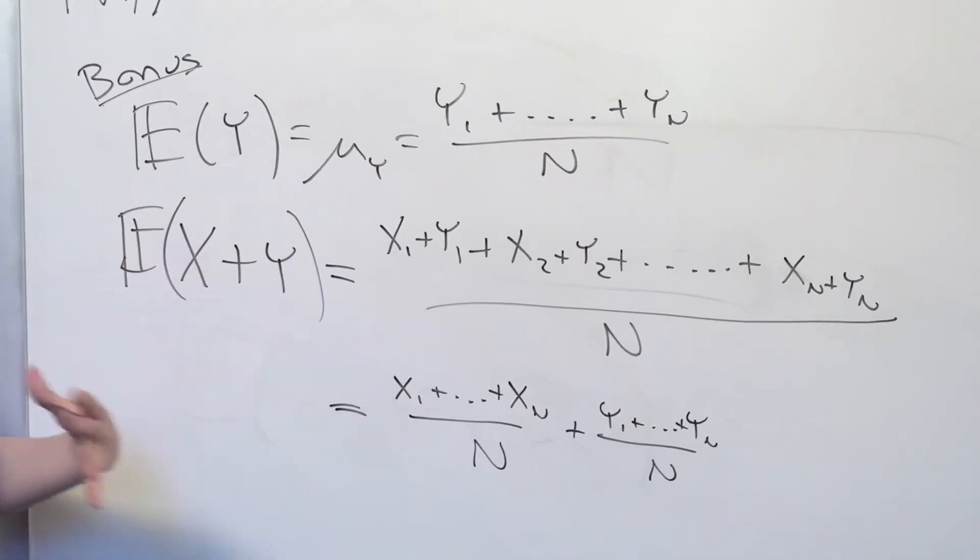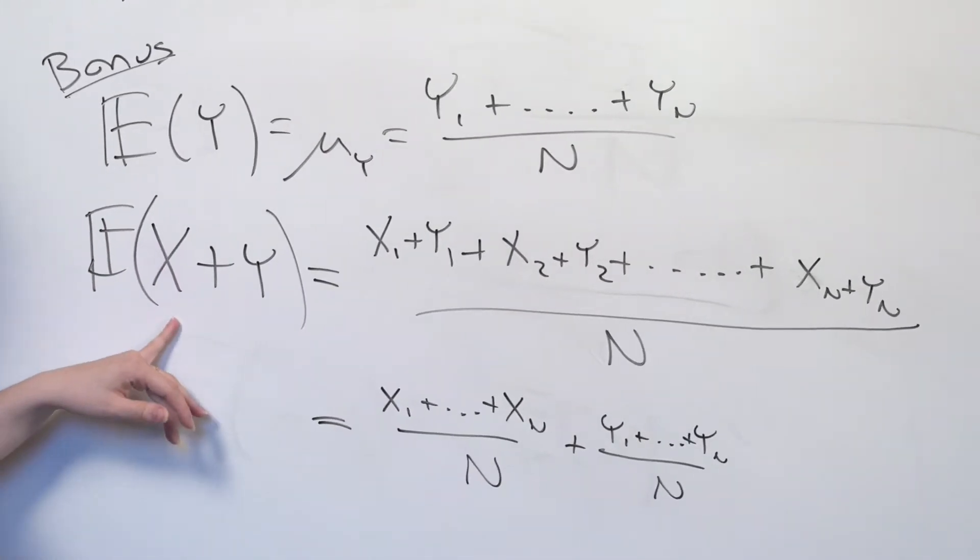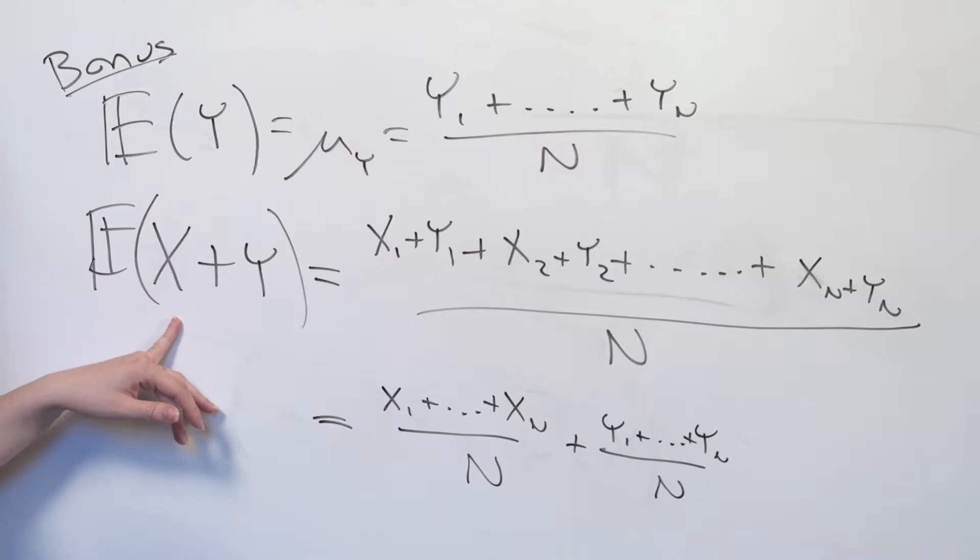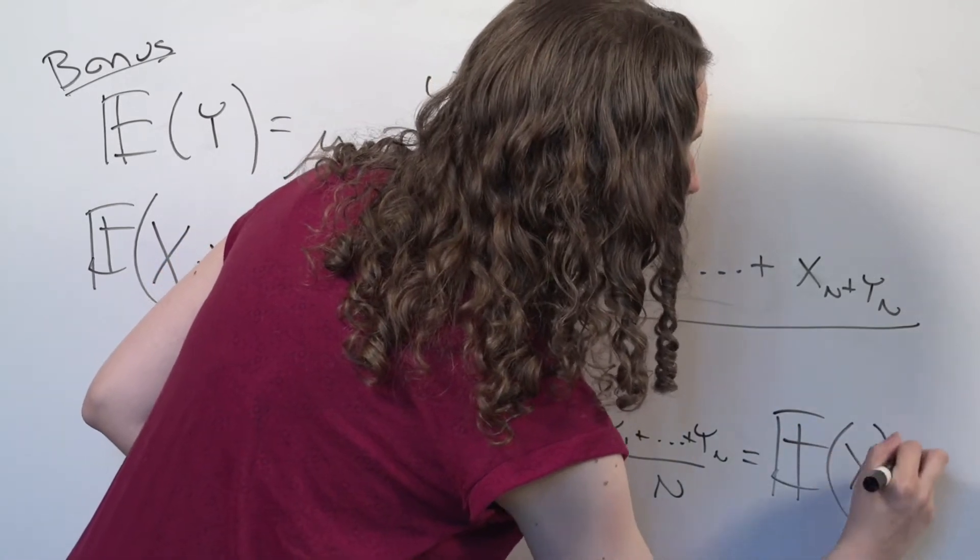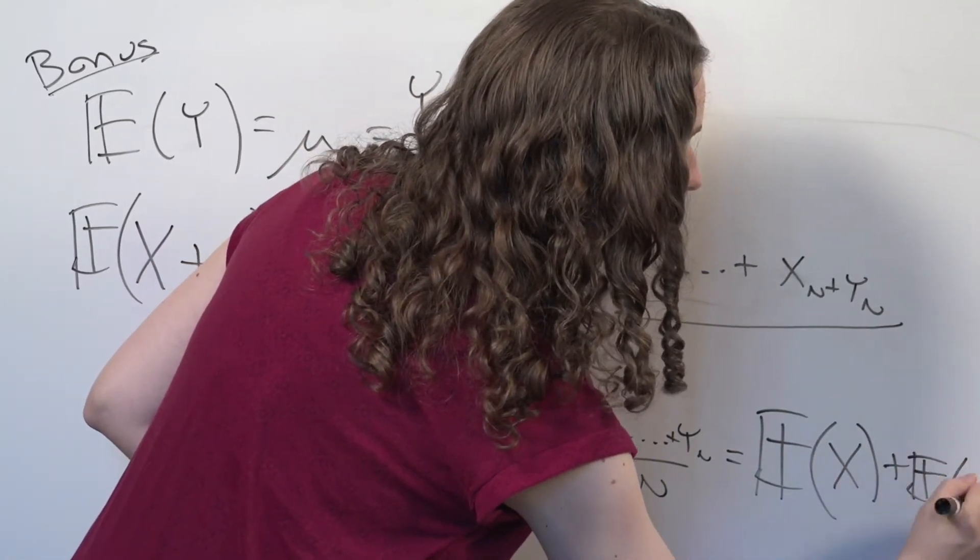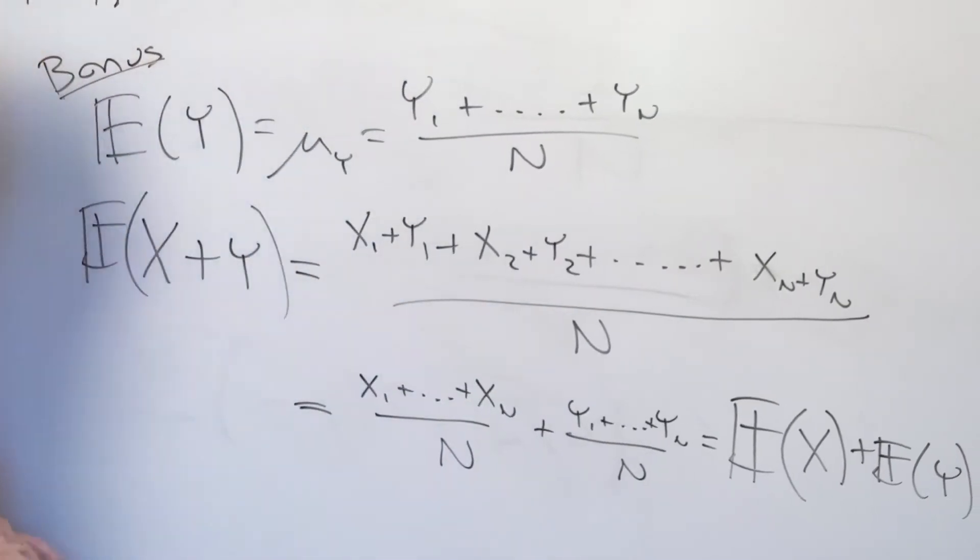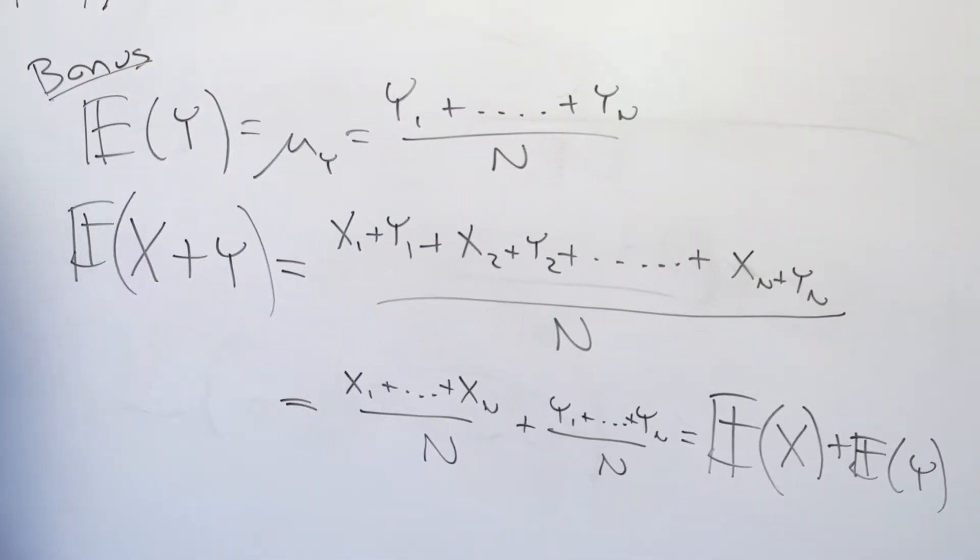In other words, the expectation of the quantity X plus Y, the expected value that I get if I randomly drew one person and wrote down her income and her bonus, is equal to the expected value of everybody's incomes, plus the expected value of everybody's bonus. And I bet that property is not particularly surprising.